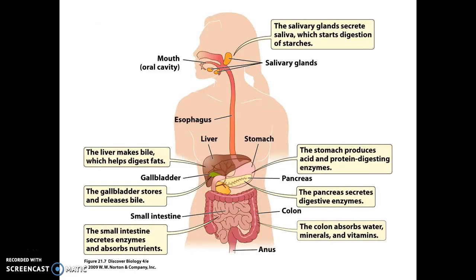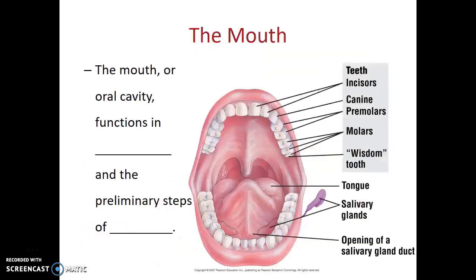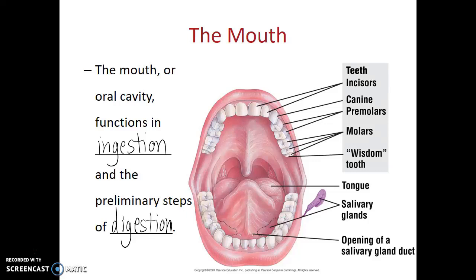Here we see a diagram of the human digestive system, including the alimentary canal and the accessory organs. Let's take a tour starting at the mouth. The mouth or oral cavity functions in ingestion — the process of bringing food into our digestive system, simply another word for eating. The preliminary steps of digestion also occur in the mouth. It is primarily a site of mechanical digestion, with the mashing, chewing, and grinding of our teeth, although there are a few digestive enzymes in saliva that can begin breaking down some carbohydrates.